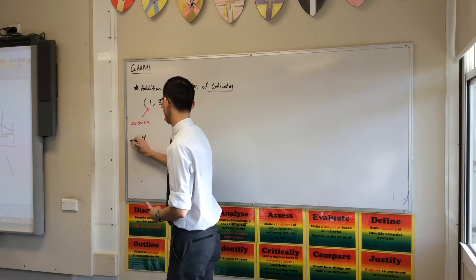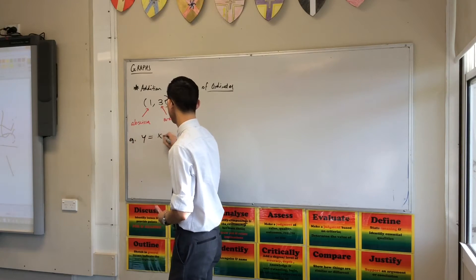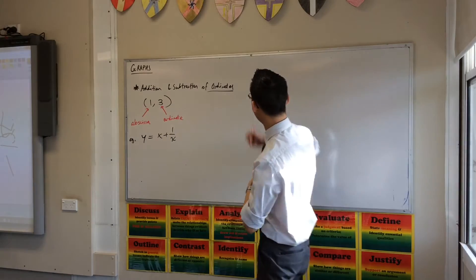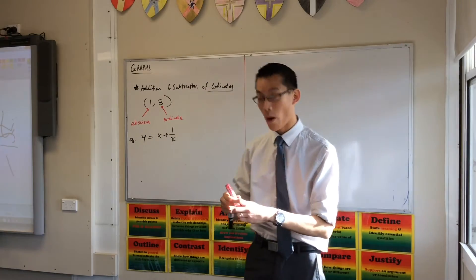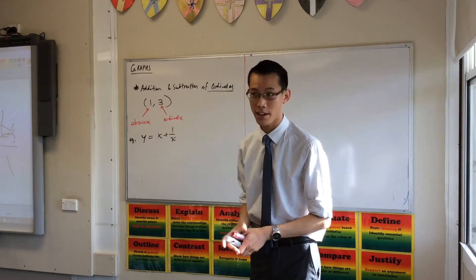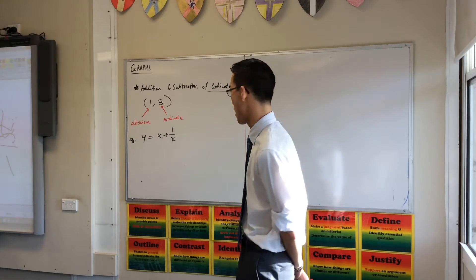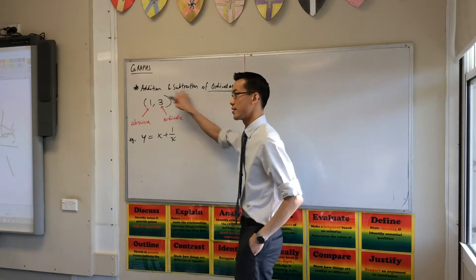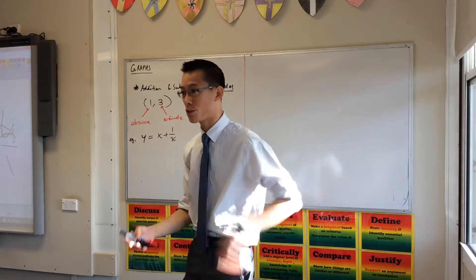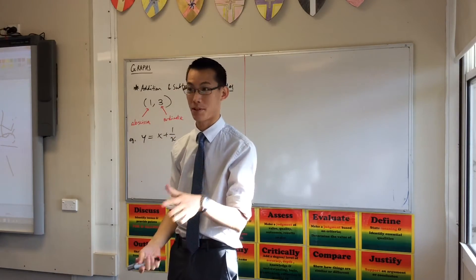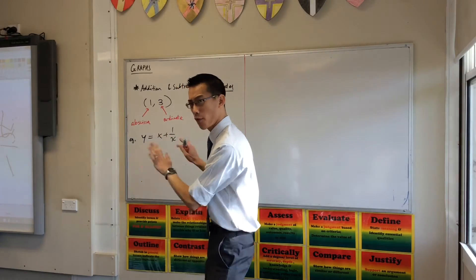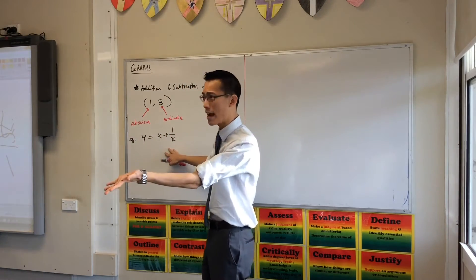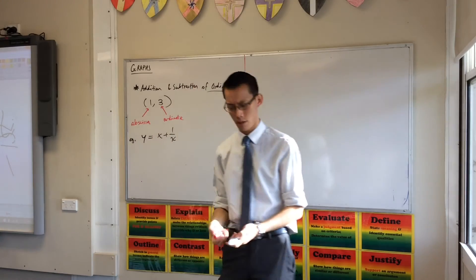What we're going to start with is this: y equals x plus 1 over x. You actually know plenty to graph this without the method I'm going to show you. But eventually this method is all you're going to be able to use to graph some of the other things I'm going to demonstrate. Now, just before we go ahead — if I wanted to graph this, and I just told you to go ahead and graph it, what would you do?